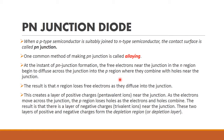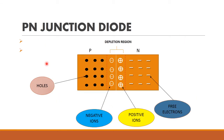When we combine these P-type and N-type semiconductors, the majority charge carriers move from one region to the other region. This is called diffusion. In N-type semiconductor, the electrons are the majority charge carriers, and in P-type semiconductor, the holes are the majority charge carriers.